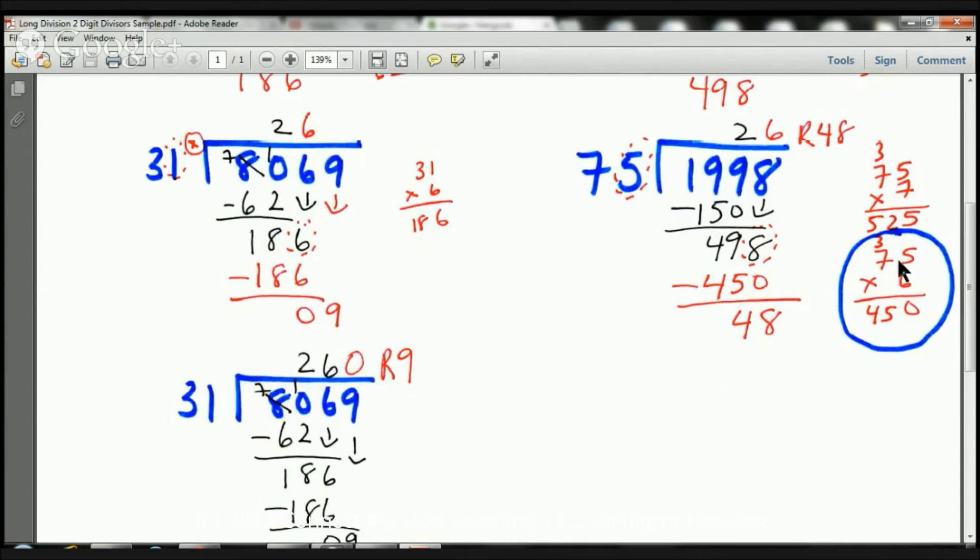75 times 6. 6 times 5 is 30. 3 goes there. 0 goes there. 6 times 7 is 42 plus 3 is 45. 75 times 6 is 450. So that's going to work. That's the closest we're going to get to 498. Without going over.